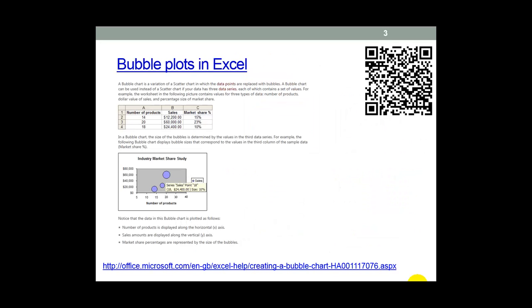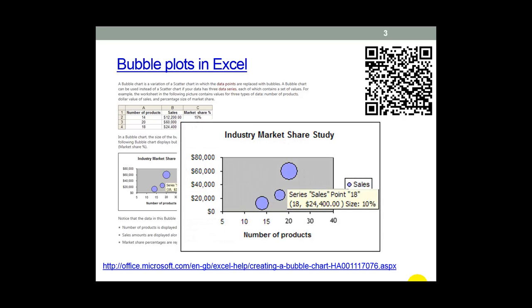Bubble plots can be done in Excel, although few people use them. When we think of a scatter plot we assume two variables, the X and Y values. Excel scatter plots need three variables, the third determining the size of the bubbles, which is a bit counterintuitive. In Tableau Public we can easily make a bubble plot with two variables, but we'll also look at how a third variable can step through several sets of the data.